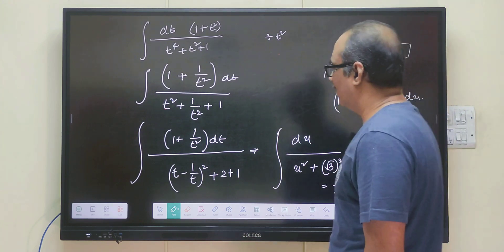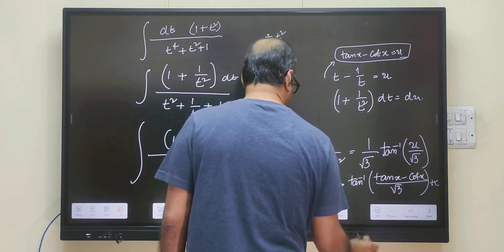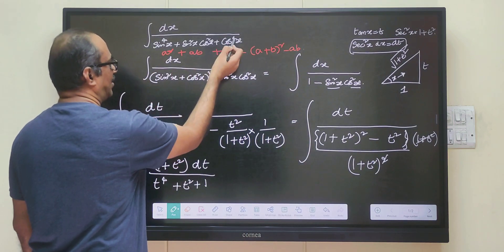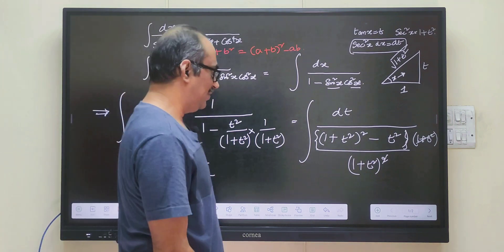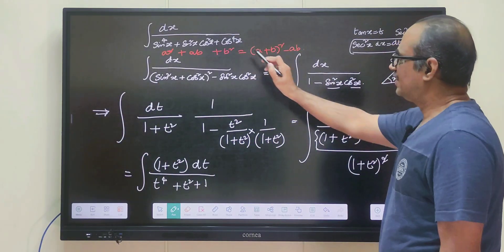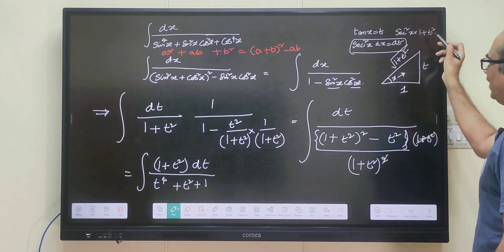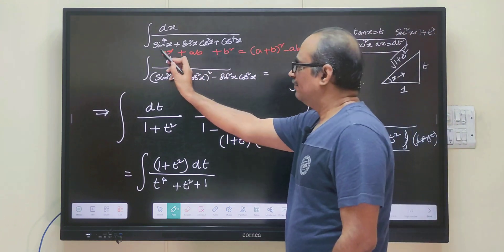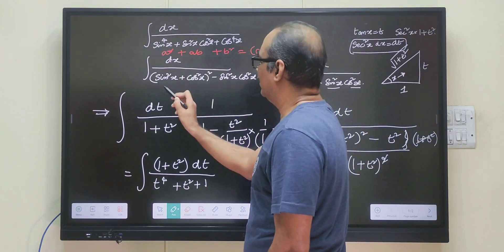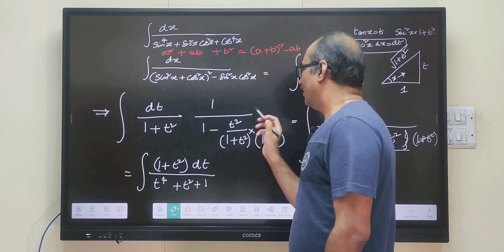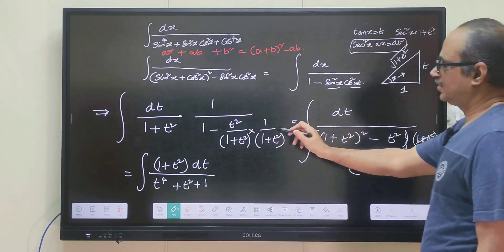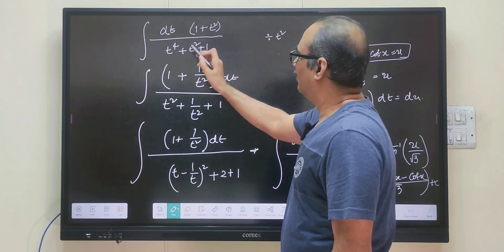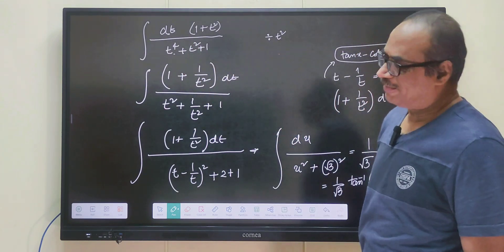So that will be the integral of 1 divided by sin to the power of 4x plus sin square x cos square x plus cos to the power of 4x. What we did: for this type of problem, we start with tan x equals t, giving secant square x equals 1 plus t square and secant square x dx equals dt. We changed the expression to 1 minus sin square x cos square x, then substituted sin square x and cos square x to get the integral of t times 1 plus t square by t power 4 plus t square plus 1.